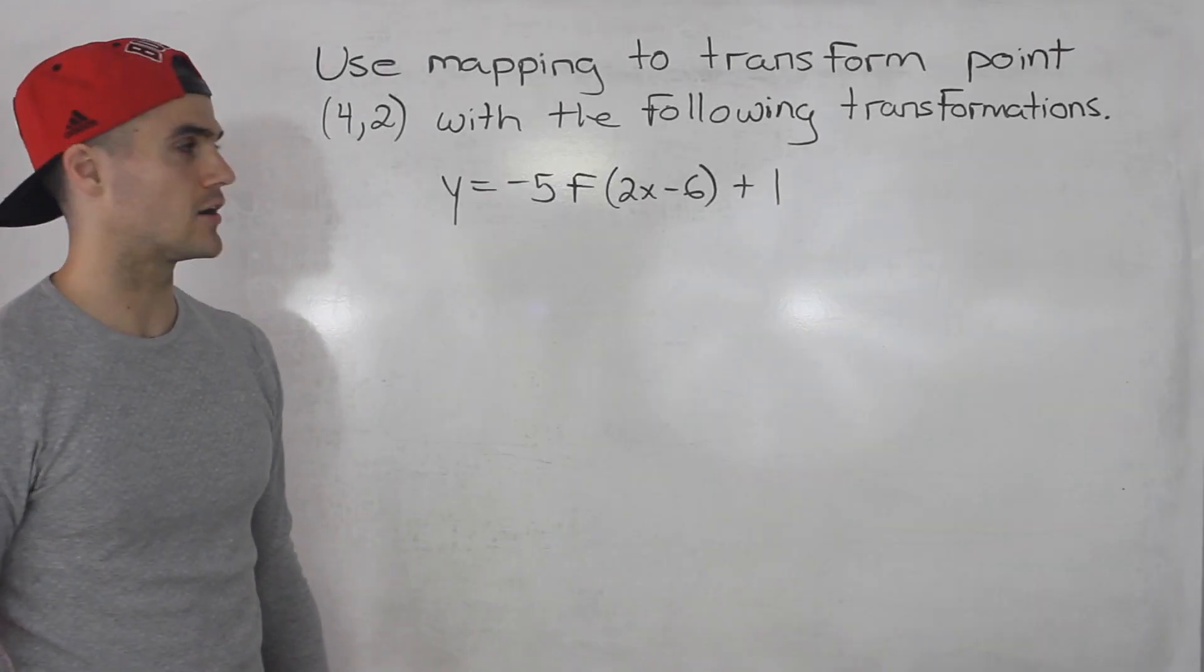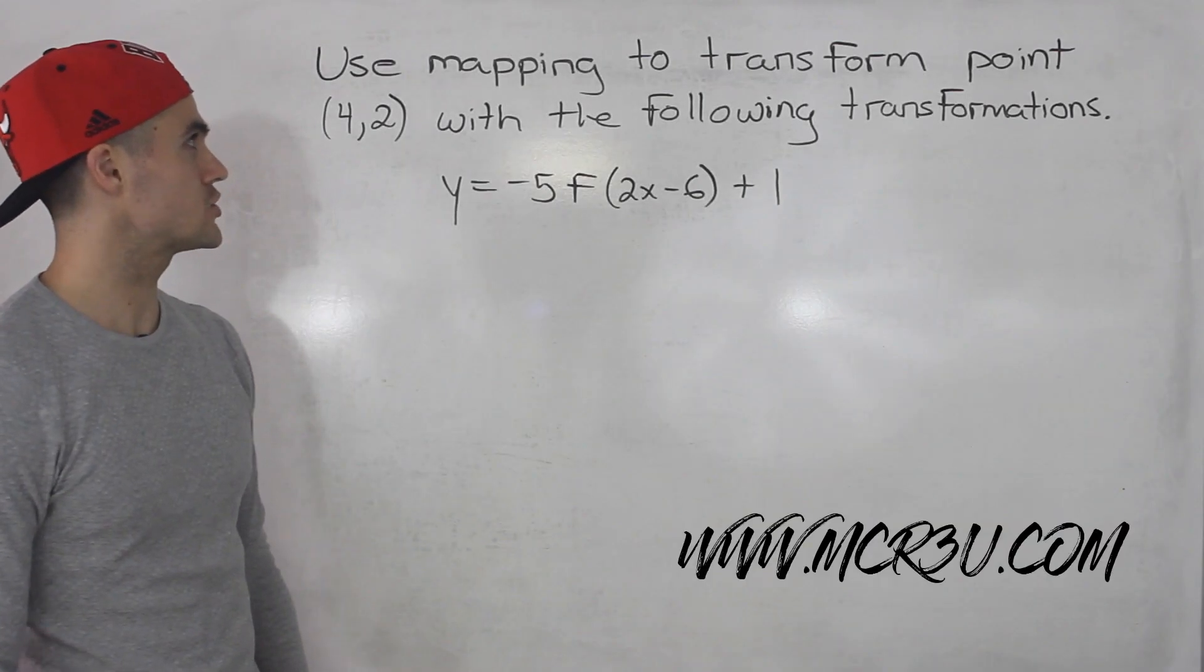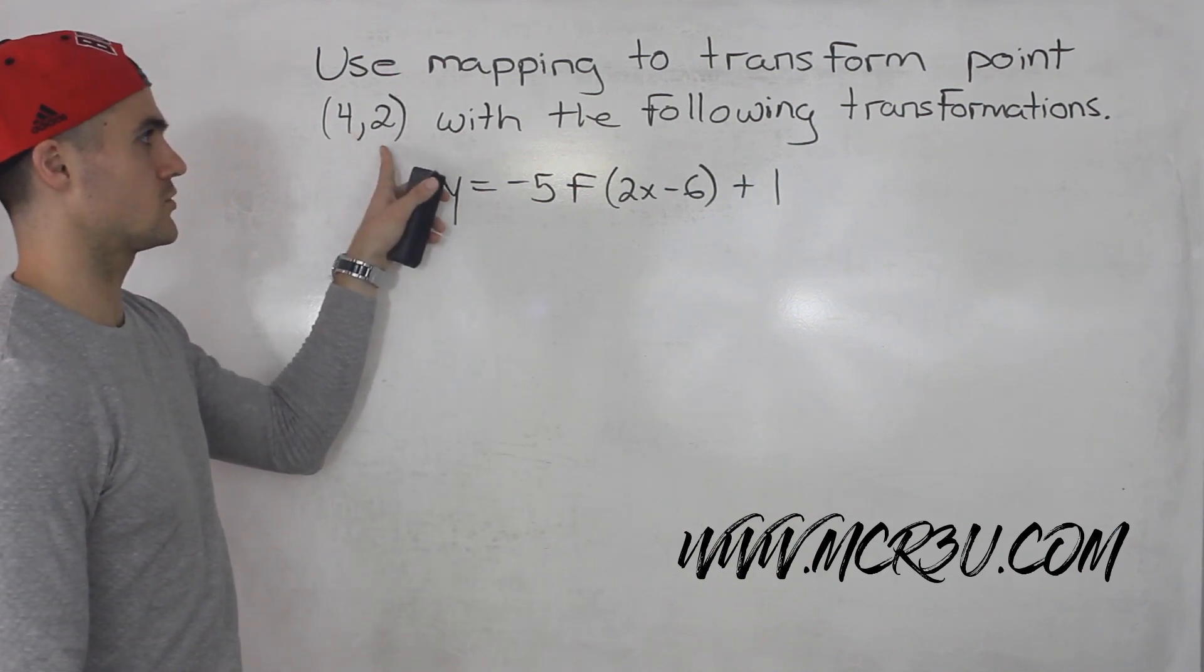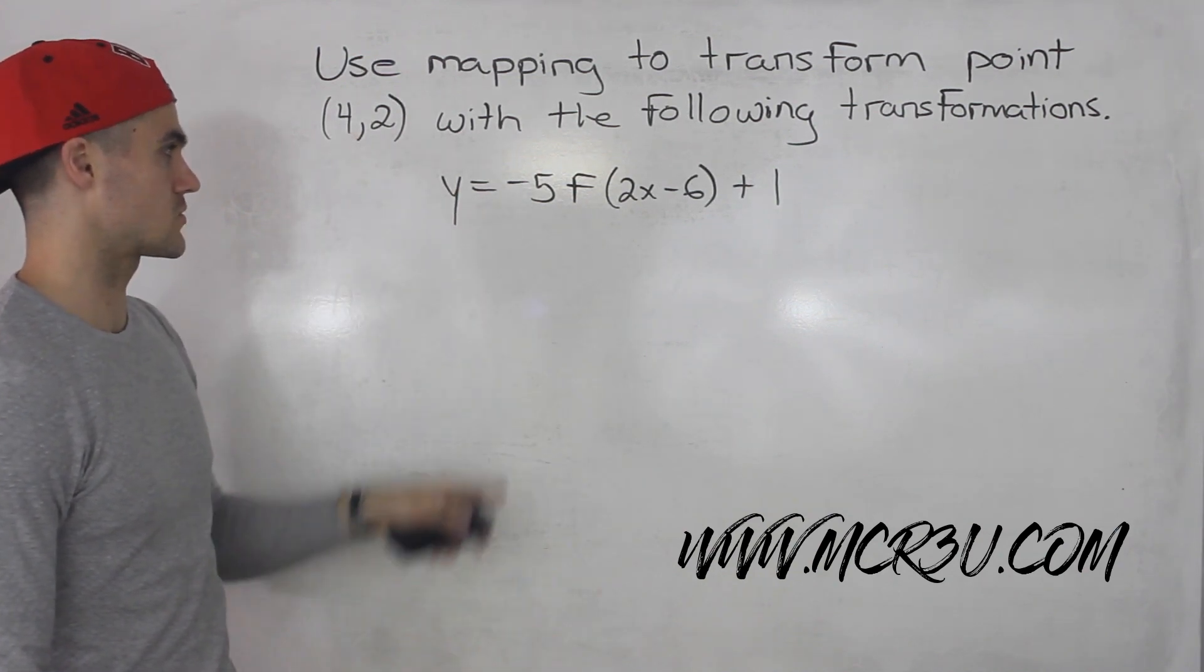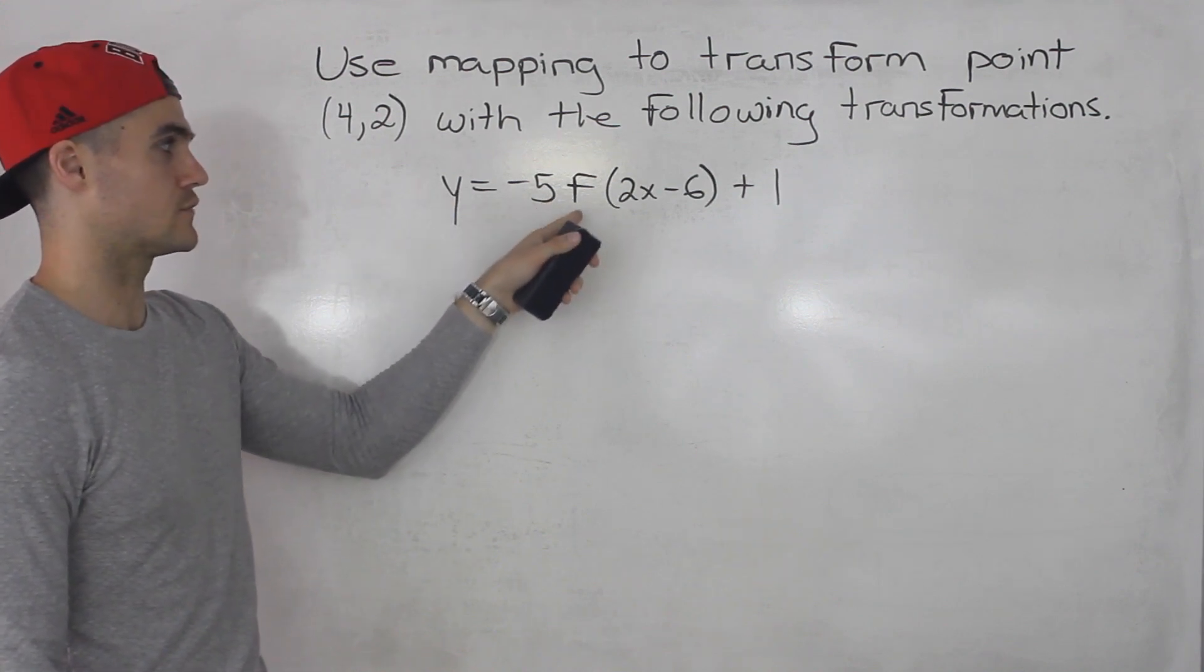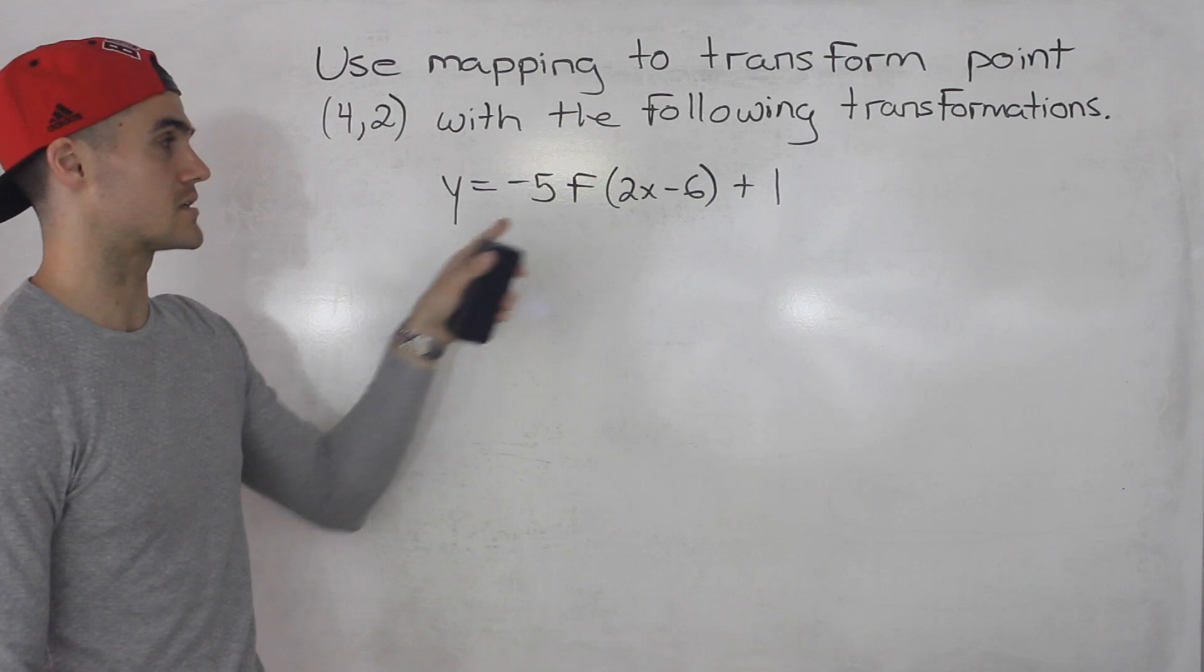What's up everybody, welcome back. Patrick here, moving on to the next question. We have to use mapping to transform the point (4,2) with the following transformation. So we got this transform function here: y equals negative 5 f of 2x minus 6 plus 1.